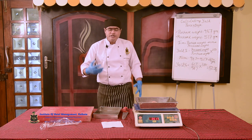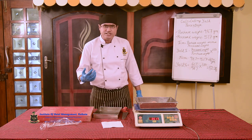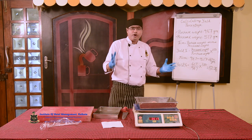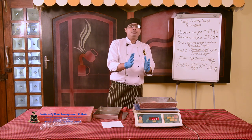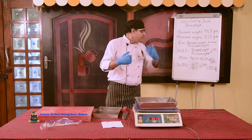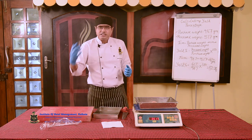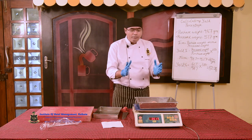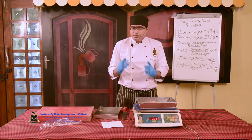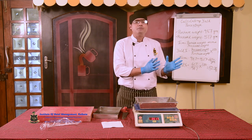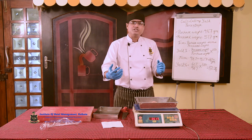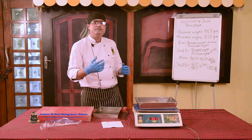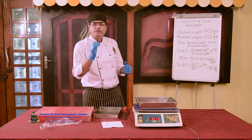We see how progressively with every stage of processing the yield percentage is going down — that is, the net usable product and its weight are going down. In this way we calculate the yield for various cuts, and this yield percentage will help us find out what amount of raw material is required to make a certain recipe for certain portions. Once we get the quantity of raw material required, it will also help us calculate the food cost.